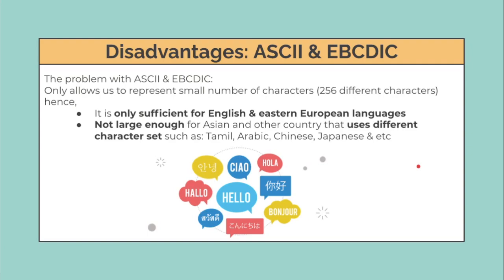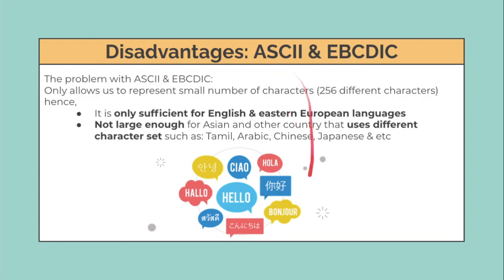Although ASCII and EBCDIC take up less memory, the problem is they only allow representation of 256 different characters, which is only sufficient for English and Eastern European languages. They are not large enough for Asian languages and other countries that use different character sets, such as Tamil, Arabic, Chinese, Japanese, and others. Languages like Korean, Thai, Japanese, and Mandarin cannot be represented using ASCII or EBCDIC.